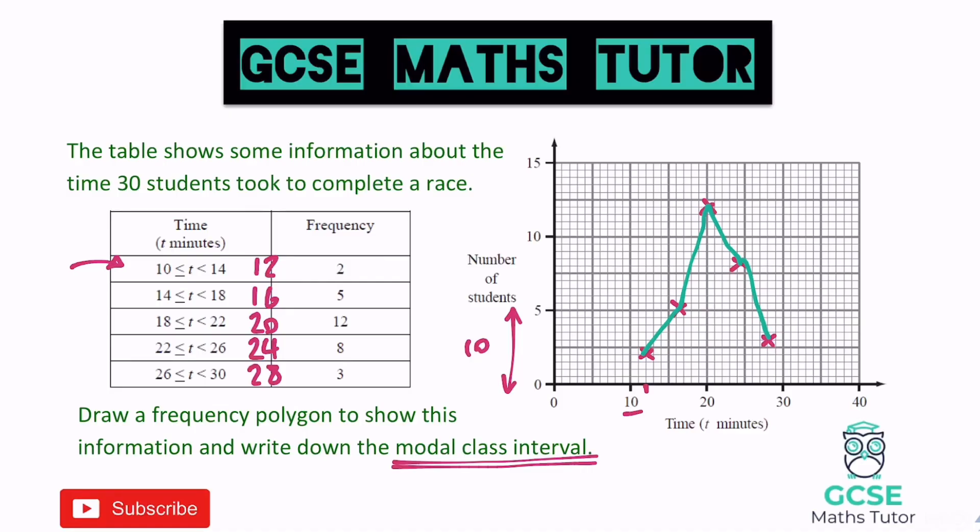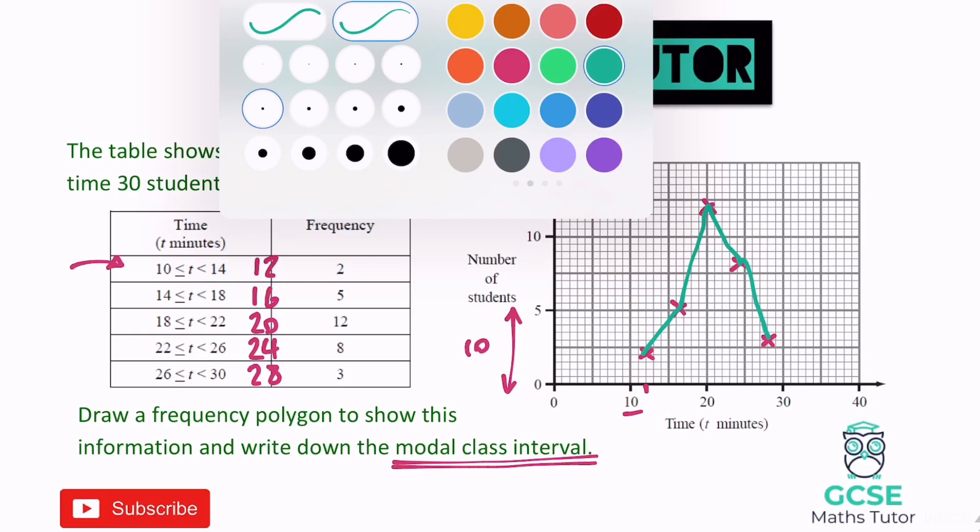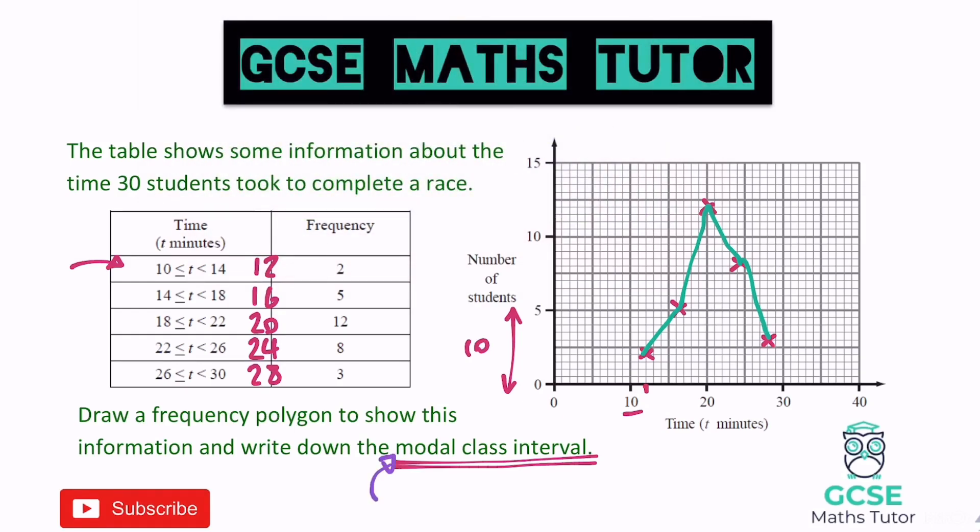Now for the final part of the question here, it does say write down the modal class interval. Now the language in there, you've got that word modal, which is just another word for the mode, so the mode being the most frequent, but it's saying the most frequent class. And again, I referred to these here, these are the classes on the left there, those categories, those groups, class is just another word for those. So it's asking us, which is the most frequent group, or the most frequent class, the most frequent interval there. And the most frequent is this one here with the 12 in, and that refers to this class here, which is 18 to 22. So all we're going to do, if we're writing down the modal class interval, is to write down exactly what's in the box there, which is 18 to 22, getting the symbols obviously as they're written in the box, and that is our modal class interval 18 to 22.